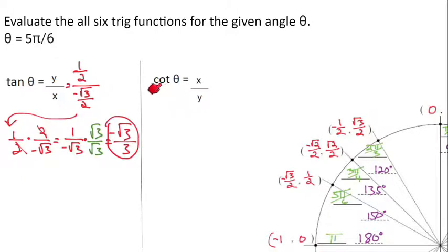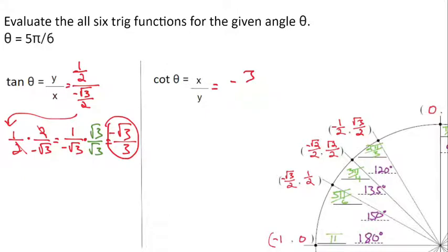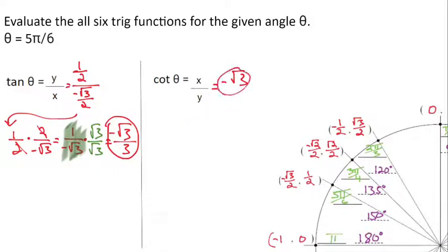Cotangent is the reciprocal of tangent — instead of y over x, it's x over y. You could flip −√3/3, but then you'd need to rationalize again. What's easier is to go back to the intermediate form 1/√3 before rationalization and take the reciprocal of that, giving us −√3/1 or simply −√3. So we've now evaluated all six trig functions.